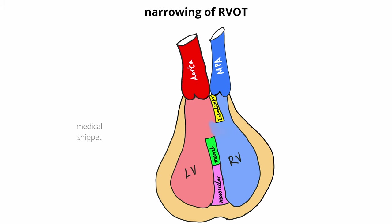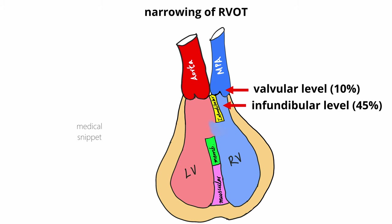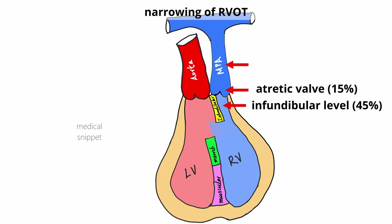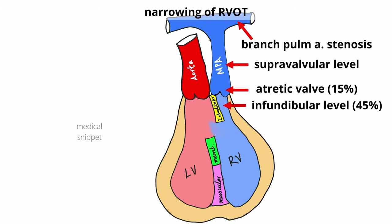The RVOT obstruction can be at multiple levels. Most commonly the obstruction is at the level of the infundibulum. Rarely, the obstruction is at the pulmonary valvular level, or a combination of both. In severe cases, the pulmonary valve can be atretic. There can also be supravalvular narrowing in the main pulmonary artery or in the branch pulmonary arteries.